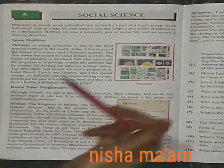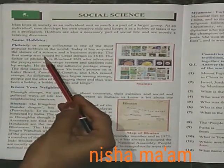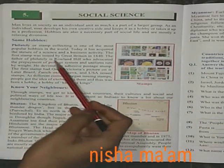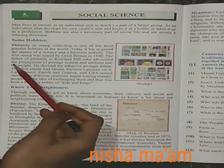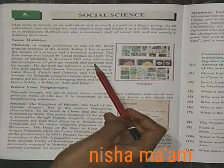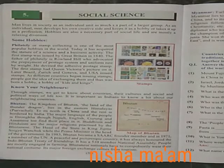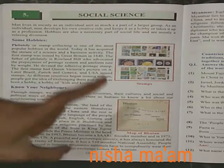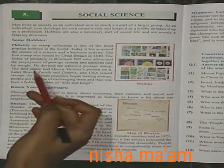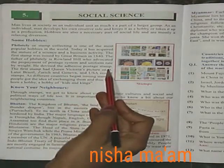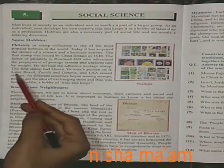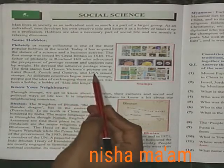The first stamp was issued by Great Britain in 1840. The father of philately is Roland Hill, who advocated the prepayment of postage system and a uniform rate. He devised the adhesive postage stamp. The first stamp had Queen Victoria's picture on it. Later, Brazil, Zurich, Guinea, and the USA also issued stamps.